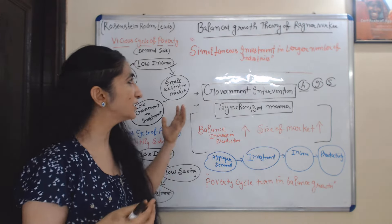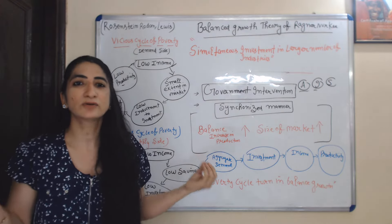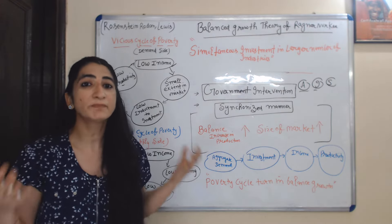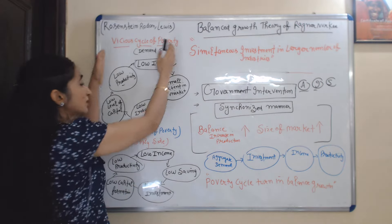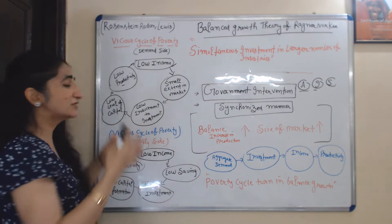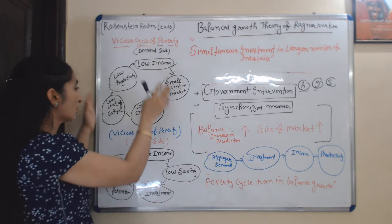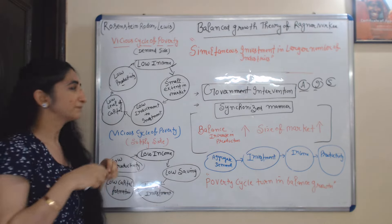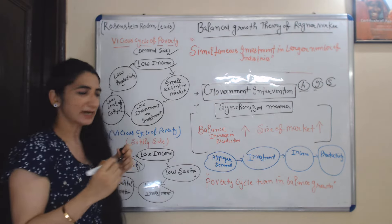But according to Nurkse, underdeveloped countries cannot grow. Why can underdeveloped countries not grow? Because of the vicious cycle of poverty. What does the vicious cycle of poverty mean? The vicious cycle of poverty operates at two levels: one is the demand side, and the other is the supply side.